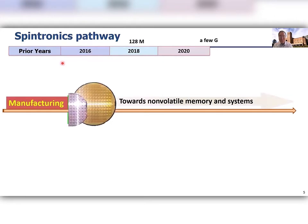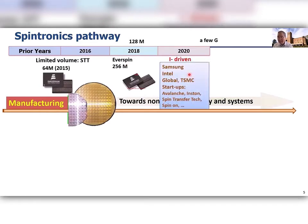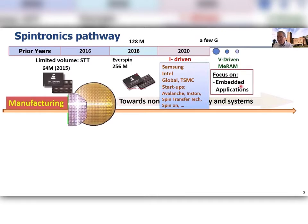As an introduction, spintronics in the past — from toggle to STT, spin-transfer torque — these are currently driven by major companies such as Intel, GlobalFoundries, TSMC, Samsung, as well as many startups. Working toward spin-orbit coupling, spin-orbit torque, as well as voltage control — changing to voltage control should make systems more energy efficient.